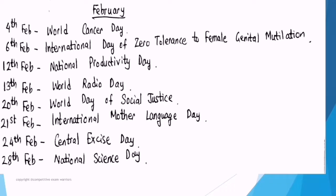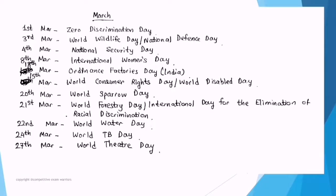February important dates: 4th February — World Cancer Day. 6th February — International Day of Zero Tolerance to Female Genital Mutilation. 12th February — National Productivity Day. 13th February — World Radio Day. 20th February — World Day of Social Justice. 21st February — International Mother Language Day (Bhasha Divas). 21st February — Central Excise Day. 28th February — National Science Day.